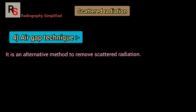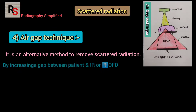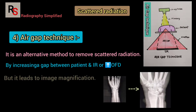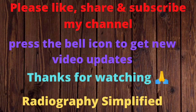Air gap technique is an alternative method to remove scattered radiation by creating a gap between the patient and the image receptor, but it leads to image magnification. If you find this video informative, please like, share, and subscribe. Thanks for watching.